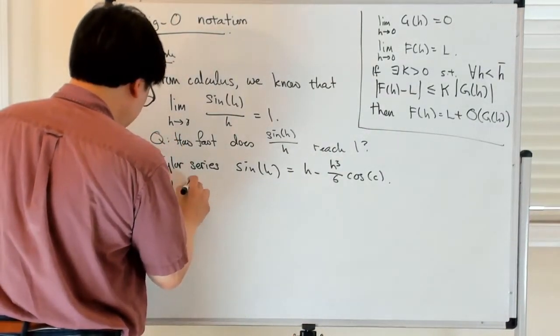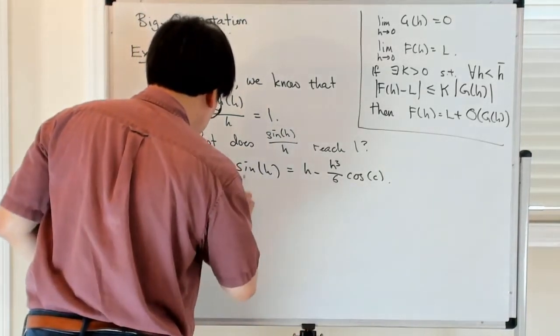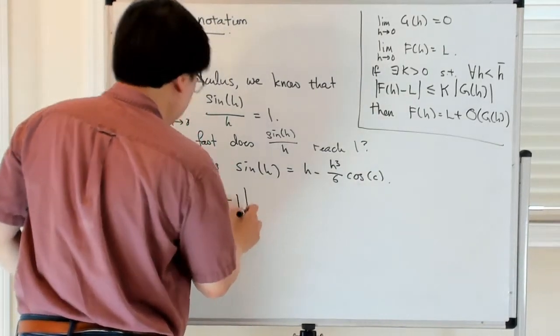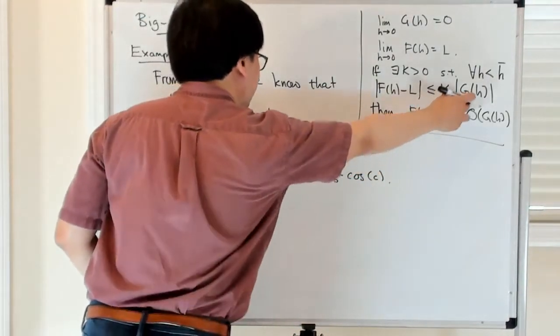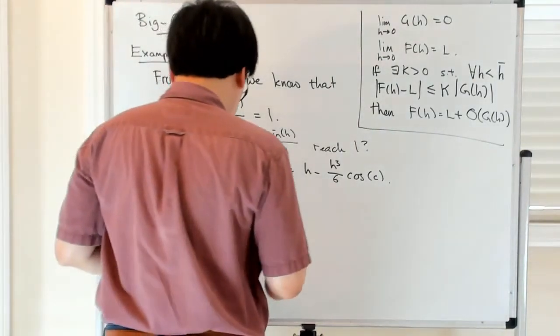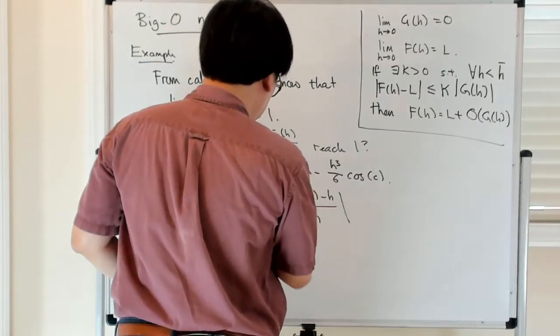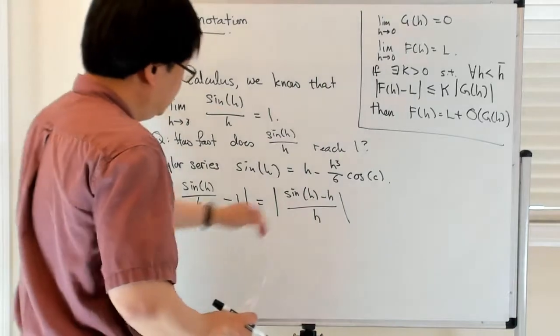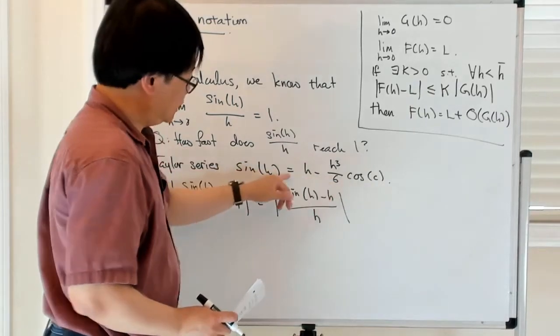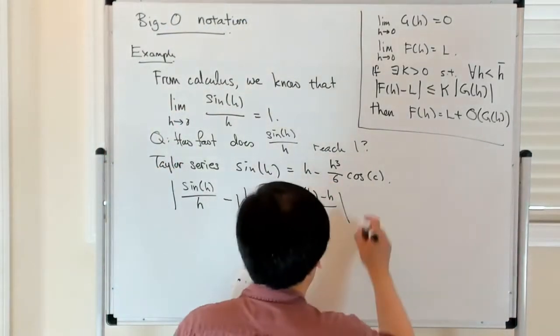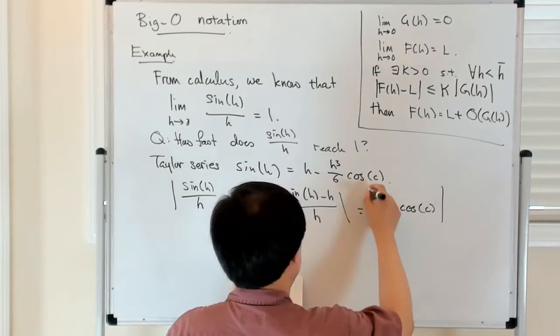So we know that sine of h over h minus 1. So I'm doing this f of h minus the limit. I'm going to try to establish a bound. So that's equal to sine of h minus h over h, and I can substitute the Taylor expansion with the remainder term, so that's actually an equality. So that's equal to h squared over 6 cosine C.